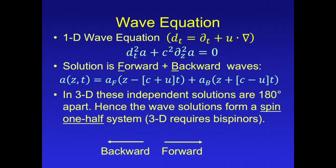Now let's analyze the wave equation to see how it relates to the Dirac equation for elementary particles. If we look at the one-dimensional wave equation using a total time derivative, so accounting for possible motion of the medium, we have this equation, which is the ordinary wave equation. And the solution is simply a combination of forward and backward propagating waves. In three dimensions, these independent solutions are 180 degrees apart. Hence the wave solutions form a spin one-half system, and in three dimensions would require bispinners to represent them.